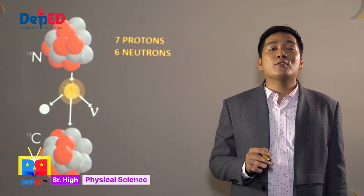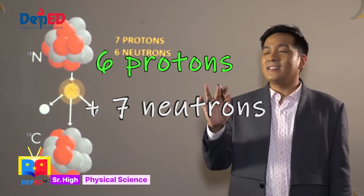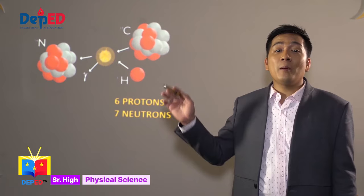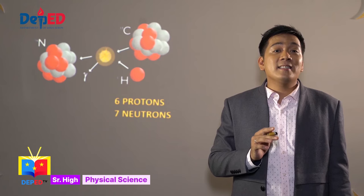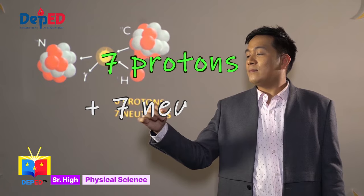Instead of 6, the nucleus now has 7 protons. This nitrogen-13 is not stable. It will eventually turn into carbon-13. How did that happen? One of the protons in nitrogen-13 turns into a neutron. This changes the total number of protons into 6 and the total number of neutrons into 7: 6 protons and 7 neutrons. Later, another hydrogen atom will hit carbon-13. The total number of protons will change again.